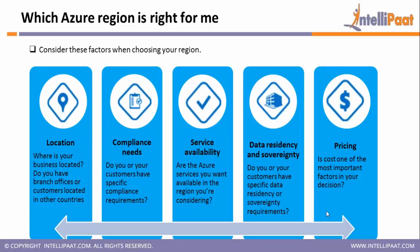Another consideration is data sovereignty and residency. For example, the Government of India says that Aadhaar data should not go outside the Indian boundary. In such cases, you cannot use any location where your data can be replicated outside your country boundary. So you can also use this reason to choose which is the best location. And the last factor is pricing.